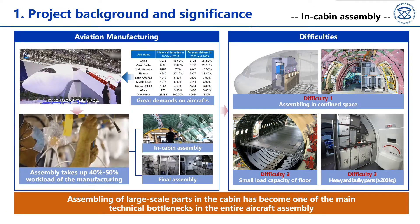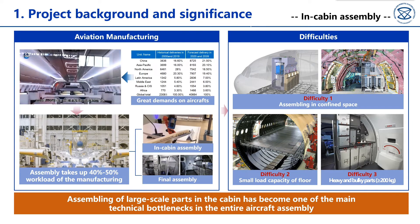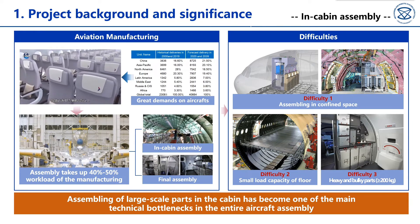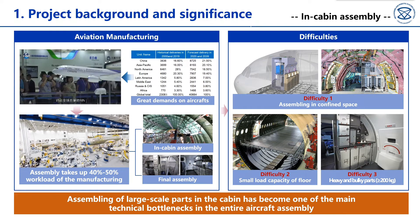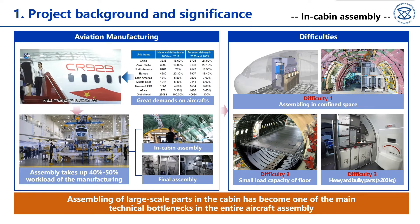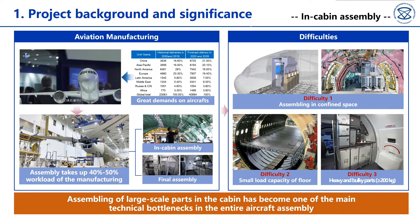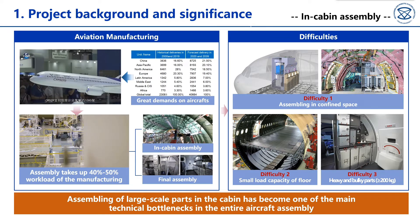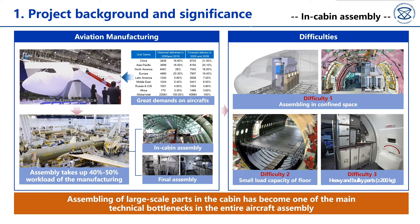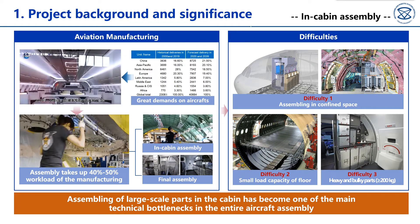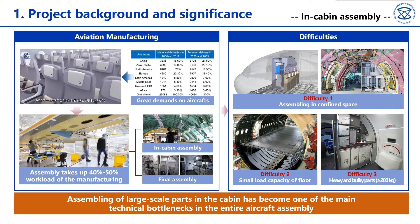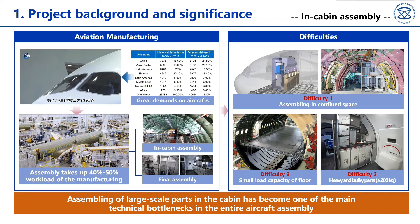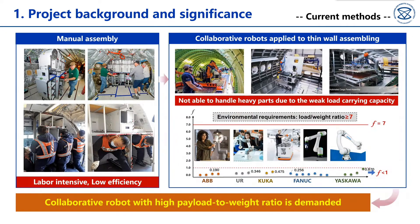Aviation manufacturing with high efficiency and reliability has become a new trend. One of the challenges lies in the assembly inside the cabin. The difficulties are threefold: first, narrow assembling space; second, small load capacity of floor; third, heavy and bulky parts. Currently, manual assembling is the most adopted method. It is labor-intensive and cannot assure assembling consistency.